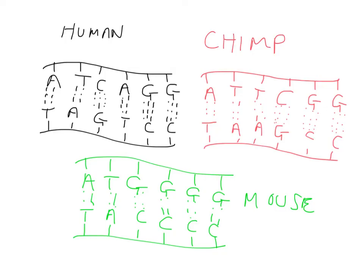In reality, sequencing DNA can be quite a time-consuming and costly process. Scientists have therefore developed a technique that enables us to make some comparisons between DNA sequences much more quickly. It's based on a principle called DNA hybridisation, and it exploits the idea of complementary base pairing between the bases.